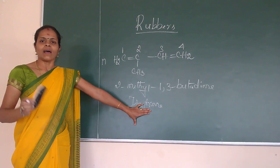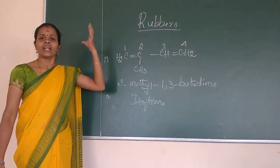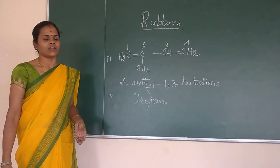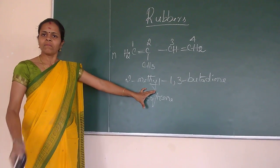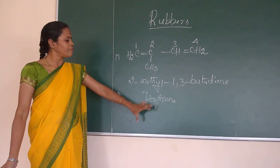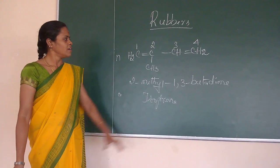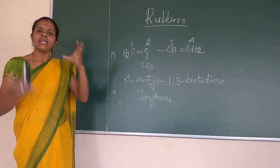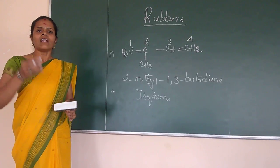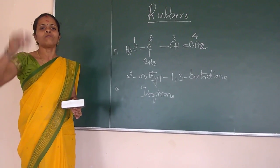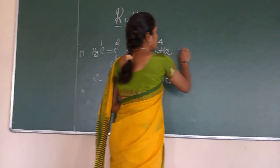This isoprene is obtained in a latex of a natural tree that is a rubber tree. This latex is nothing but a very rich amount of dispersion of isoprene. So this isoprene it is present in a latex. Now I am giving some treatment to this latex. That is polyisoprene.